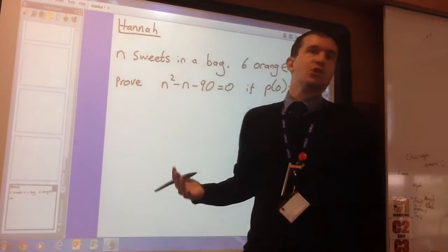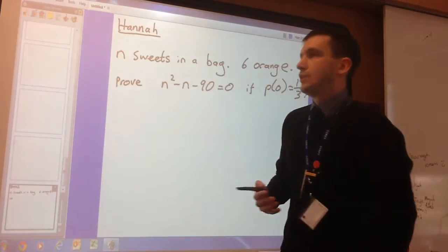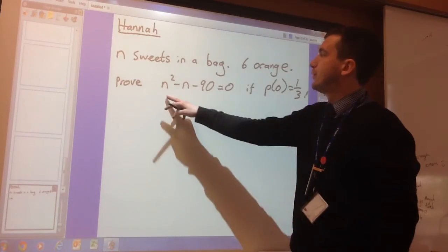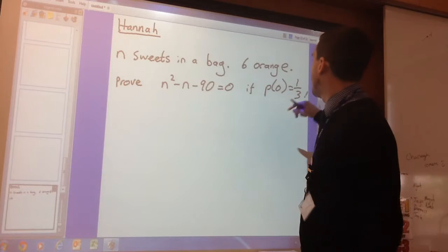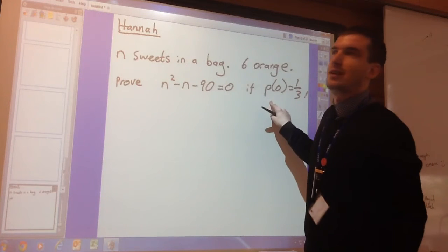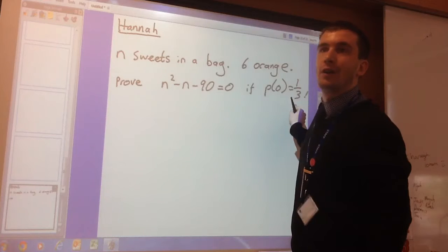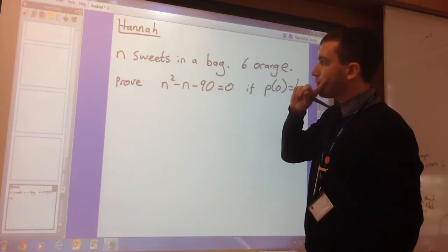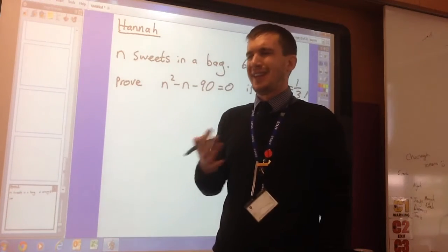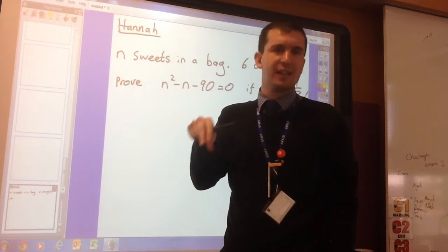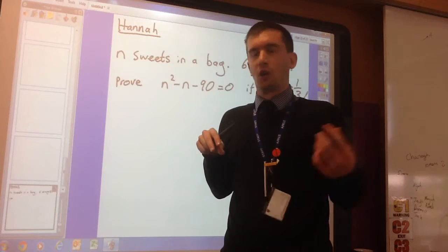So she says there's N sweets in a bag and there's six orange ones and you've got to prove this knowing that the probability to pick two oranges is a third. So what we've got to realize is it's conditional probability. She's taking the sweet out of the bag and she's not replacing it.